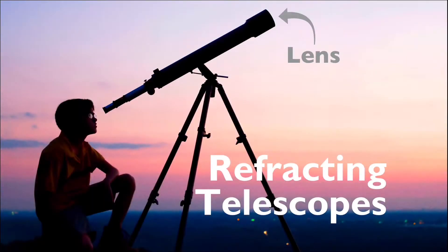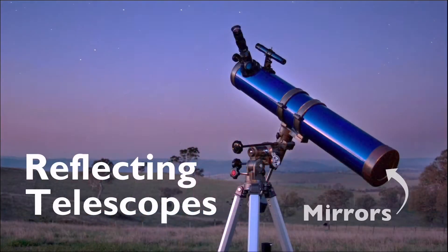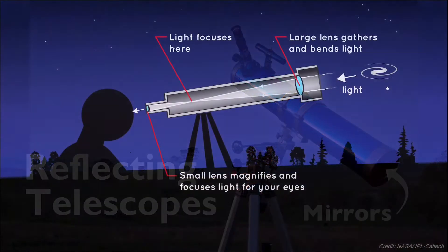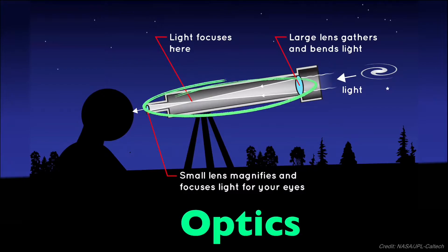There are two types of optical telescopes. We have refracting telescopes, which use lenses, and reflecting telescopes, which use mirrors. But before we go on talking about either kind, we must realize that the only way they work is by the interaction of incoming light with the lenses and mirrors in these telescopes. This interaction is called optics. It is through the optics of a telescope that it can gather light and form images for us to see.